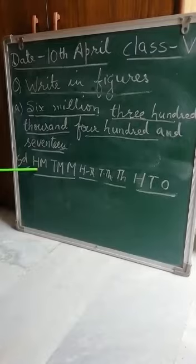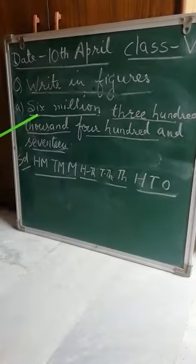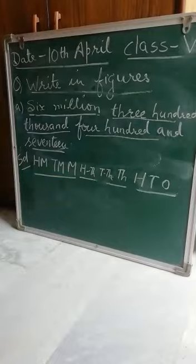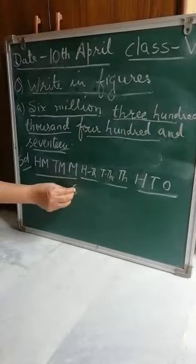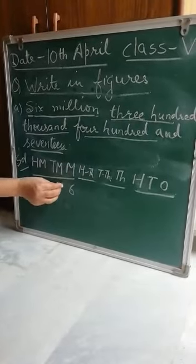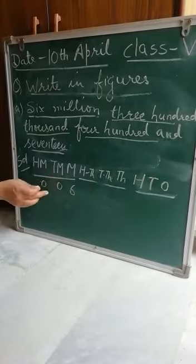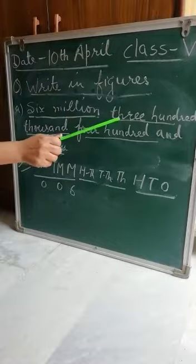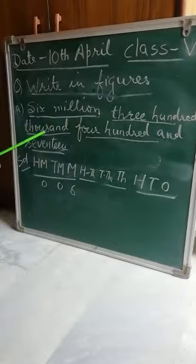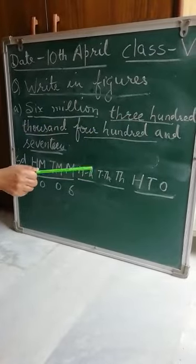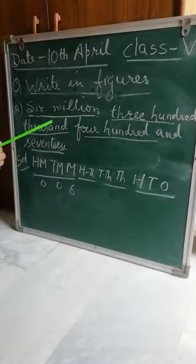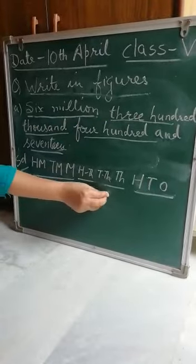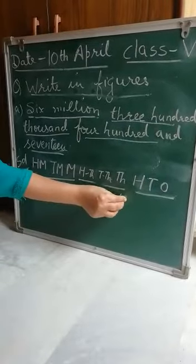So we start with the millions. Only million has six million, so we put it under million. Ten million and hundred million are not in the question, so we will put zero. Now the next period is 300,000 — this period is of thousands. How we write 300? Three, zero, zero.